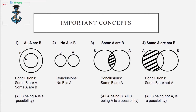In the fourth case, 'some A are not B,' we have two circles and the conclusion is 'some B are not A.' There is also a possibility that all B are not A or all A are not B. We have to consider these possibilities, and we will see how to handle them in the questions next.